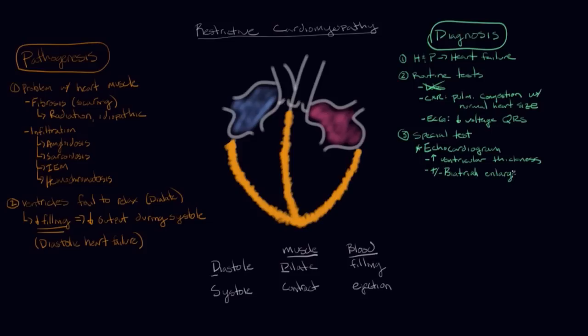And then what you might also see, although not always, is biatrial enlargement. And I didn't draw this in in this diagram, but what this means is, as the heart chambers are not able to dilate and expand and fill with blood, the atrium here and here, blood gets backed up in them. And they start to expand to accommodate that backup of blood. So sometimes these atria will be enlarged. And so you can see that on an echocardiogram.